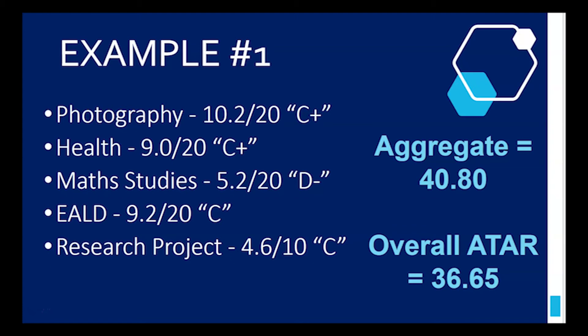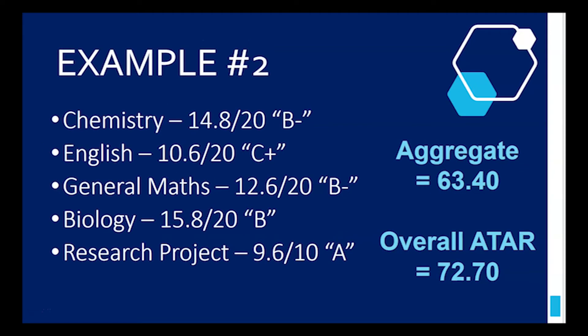So let's have a look at a student who did a little bit better. This student here did chemistry, English, general maths, biology and research project. You can see their grades there ranging from a C+ to an A. They got an aggregate of 63.4 from adding up all those subjects. Overall ATAR, 72.7. That looks a fair bit better than 36, just from taking some of those grades from C up to a B. This is where it's really important you push yourself in year 12 to get the best grades that you can.